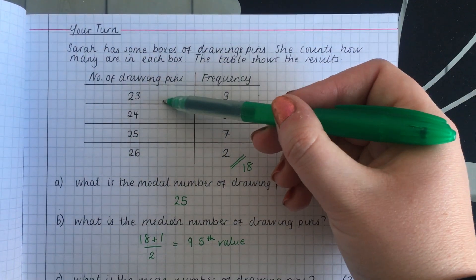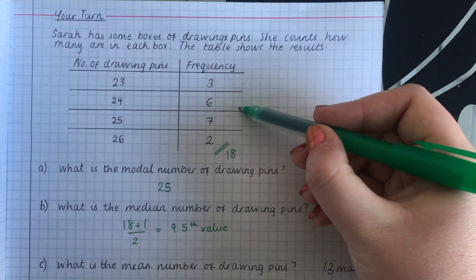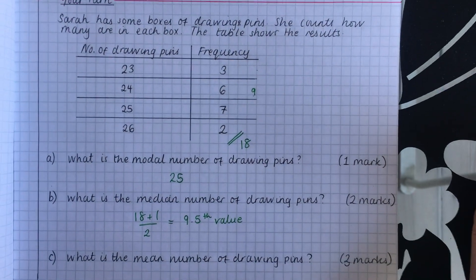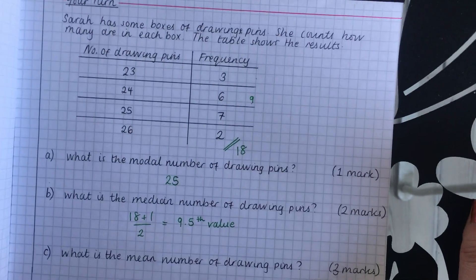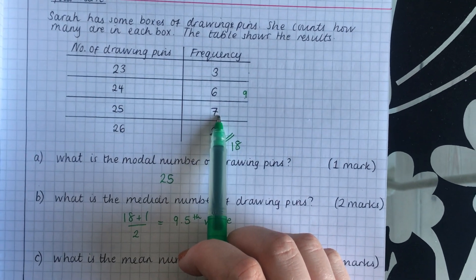So then we go down our frequency column and we see when we go past 9.5. So obviously three lots of 23. That's not enough. We haven't got to the 9.5th value yet. Then if we add six to that, we get nine. So we've only got nine numbers so far. We're almost there, but we have to go past 9.5. So our 9.5th value must be in here.